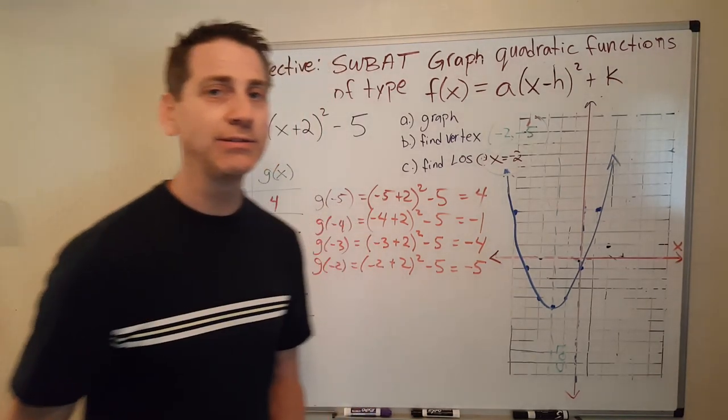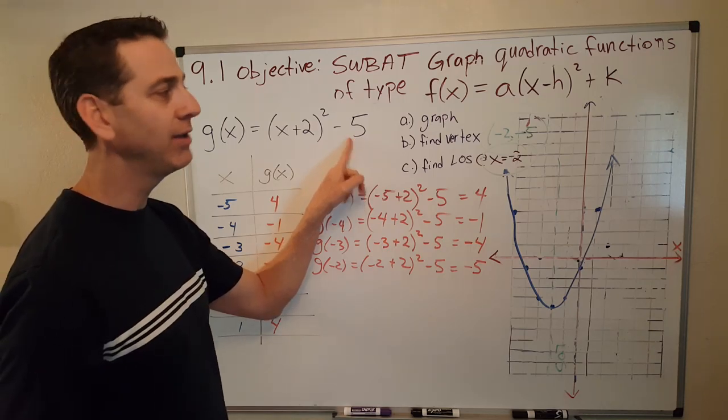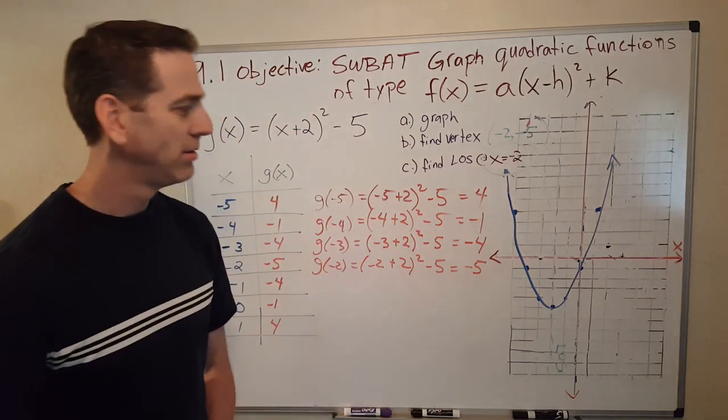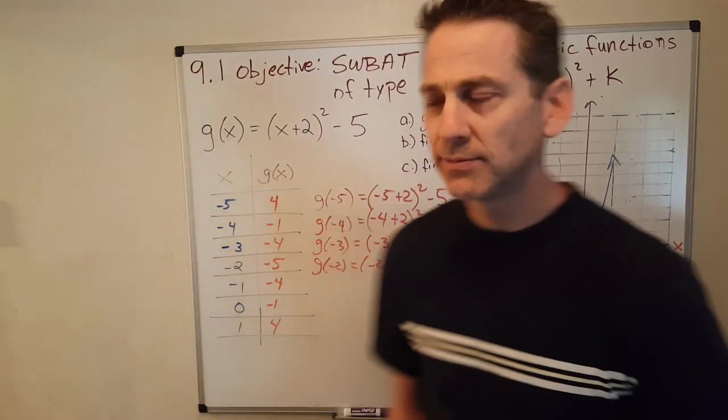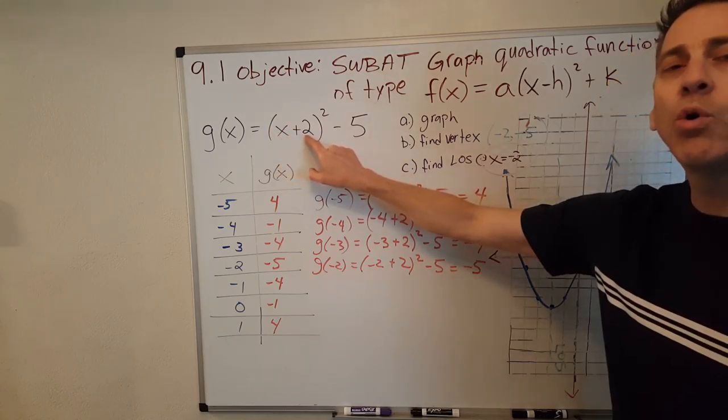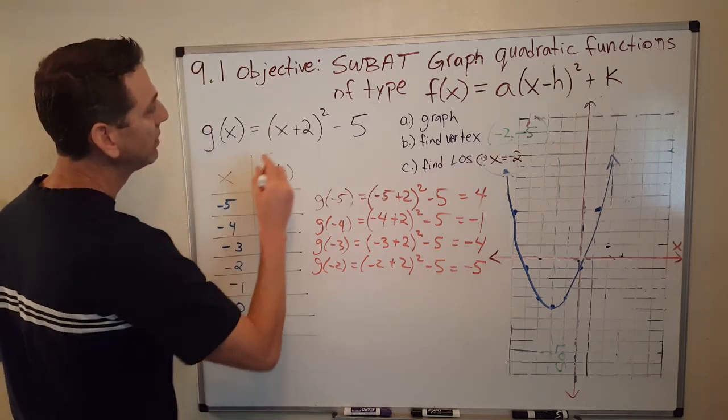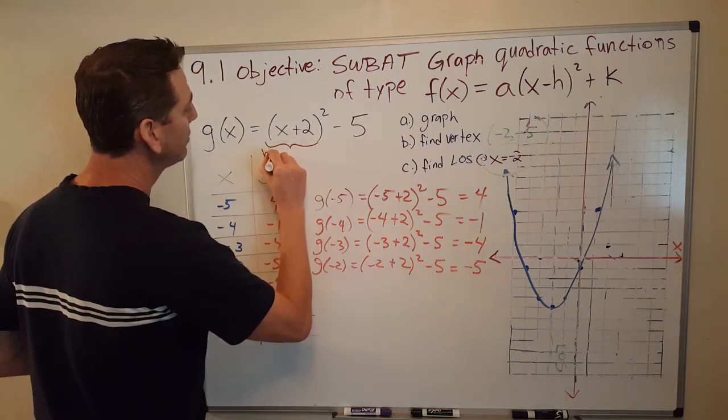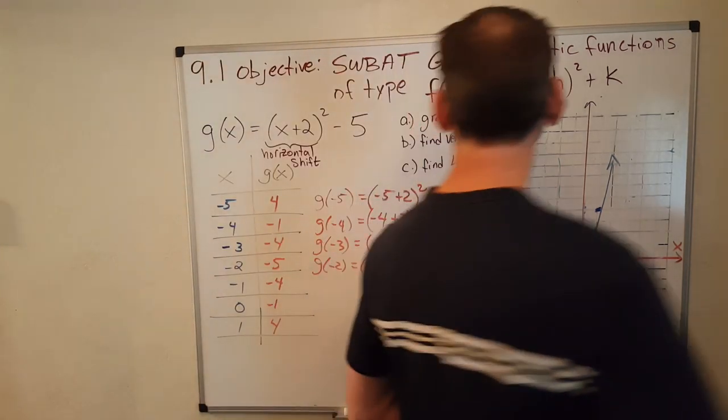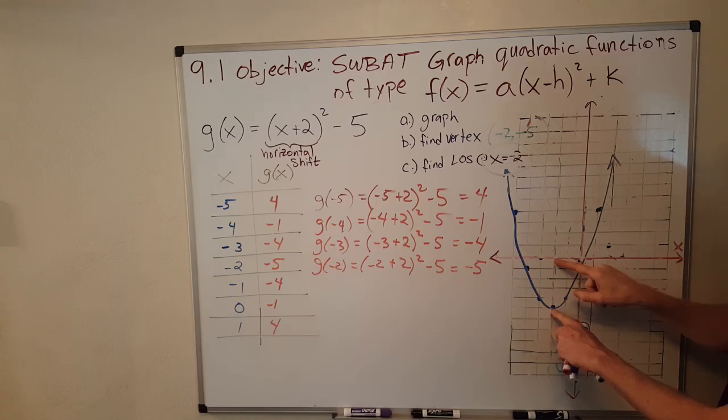So now I want you to notice. This is the moment of truth. What did this k value, what did that k value of negative 5 do to my parabola? Go ahead and pause the video and see if you can answer that question. Okay, welcome back. What did it do? Well, let's see. First of all, we saw that this x plus 2 gave it a horizontal shift of negative 2. Alright. So this here represents our horizontal shift. Okay. It shifted negative 2.